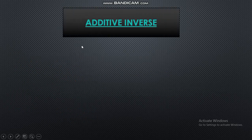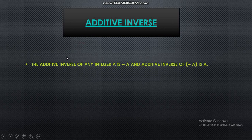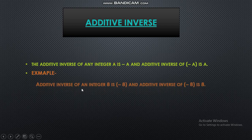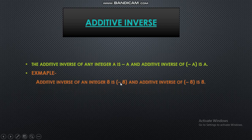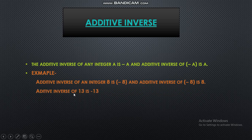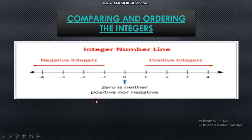Next topic is additive inverse. The additive inverse is the opposite of a given number. If your integer is a, its opposite is minus a. If your integer is minus a, its opposite is a. For example, the additive inverse of 8 is minus 8, while the additive inverse of minus 8 is 8. The additive inverse of 13 is minus 13, and the additive inverse of minus 45 is 45.